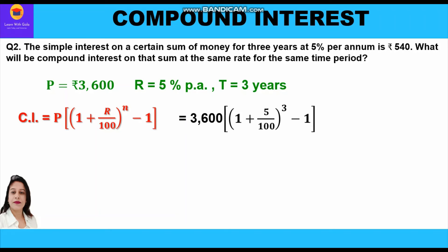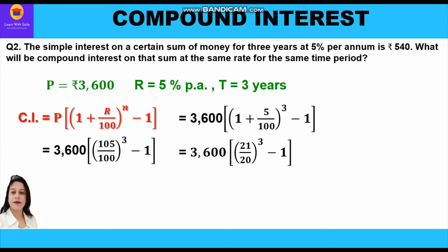Solving the bracket: 1 + 5/100 = 105/100. We can simplify by dividing by 5: 21/20. So CI = 3600 × [(21/20)^3 − 1].